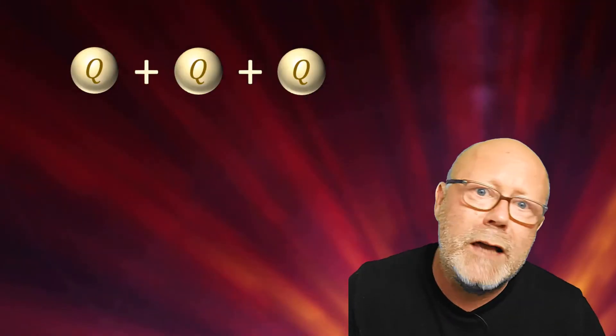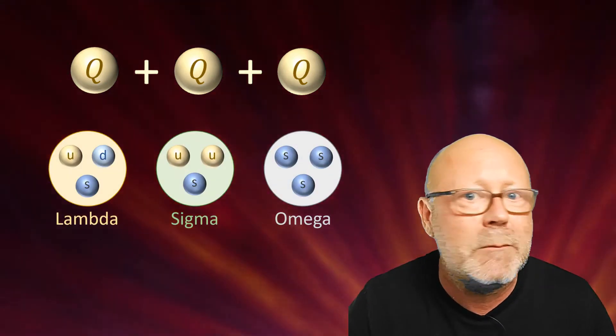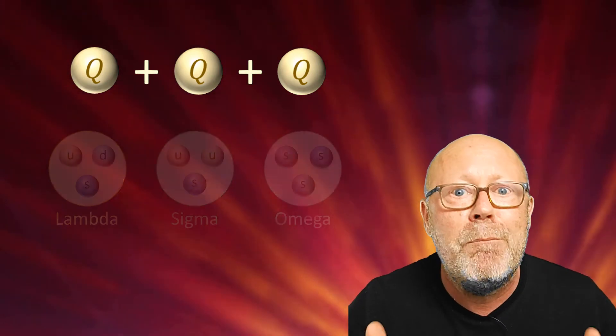When you combine three quarks, you get neutrons and protons, but you can also get other particles like lambdas, sigmas, omegas, etc. This is the baryon family.